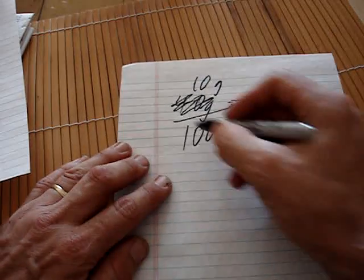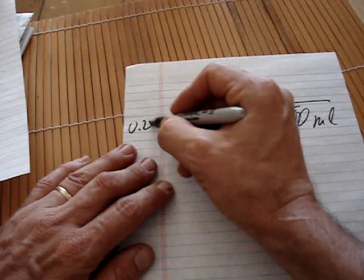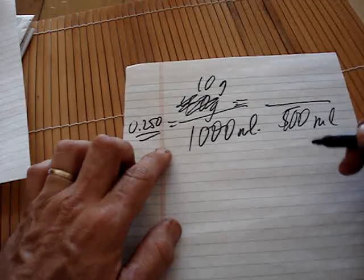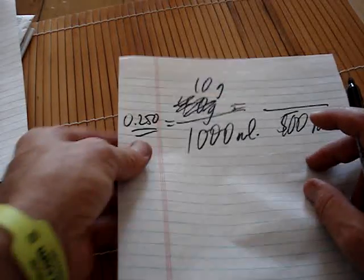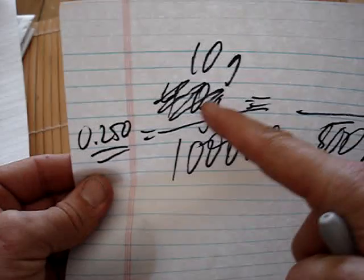Okay, now we've already told each other that we had to reduce this to 10 grams to get the 0.25 mole, right? You got the 0.25.